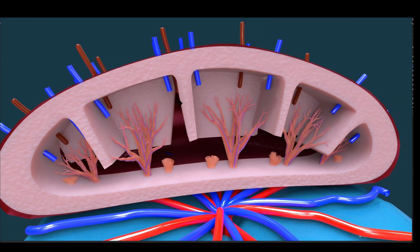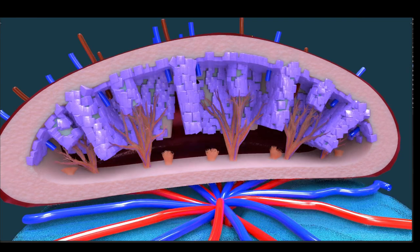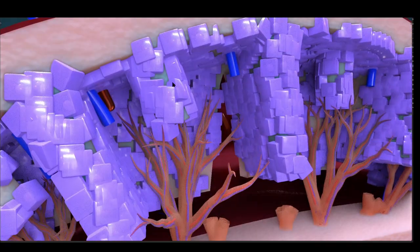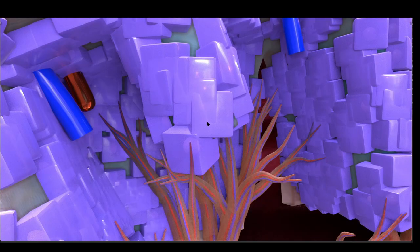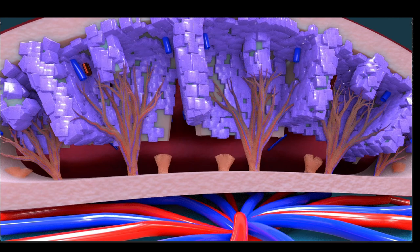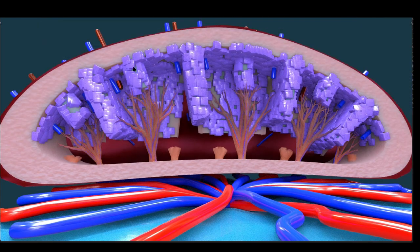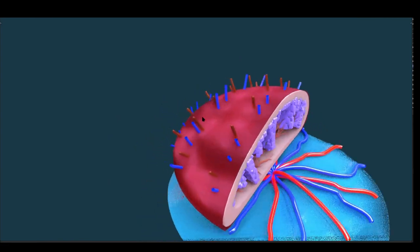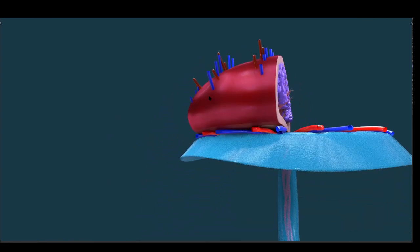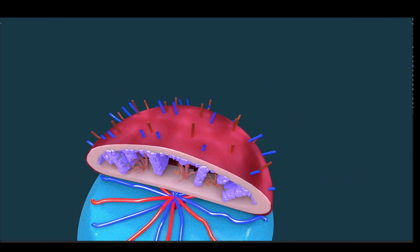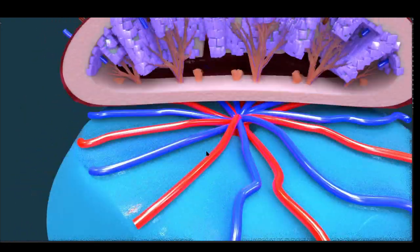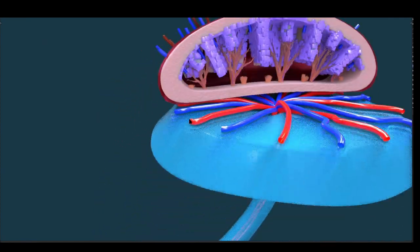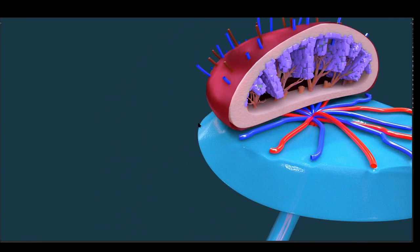Here we also see the outer trophoblastic or outer cytotrophoblastic shell. These trophoblastic columns start from the anchoring villi and fan out, completely covering even the placental septa. This is the outer trophoblastic column. This is the 3D structure of placenta. I hope that after this lecture the structure of the placenta will make much more sense to you. Thank you so much for watching this video.